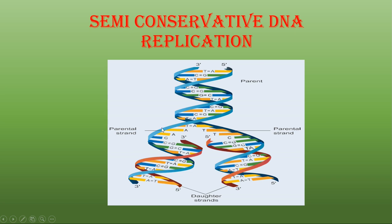DNA is a double-stranded structure, and during replication the two strands unwind and separate. Both parental strands separate, and each acts as a template to synthesize a new daughter strand with complementary base pairs. So two daughter strands are formed, each having one parental strand and one new daughter strand. Since only half the parental strand is conserved, it is called semi-conservative DNA replication.